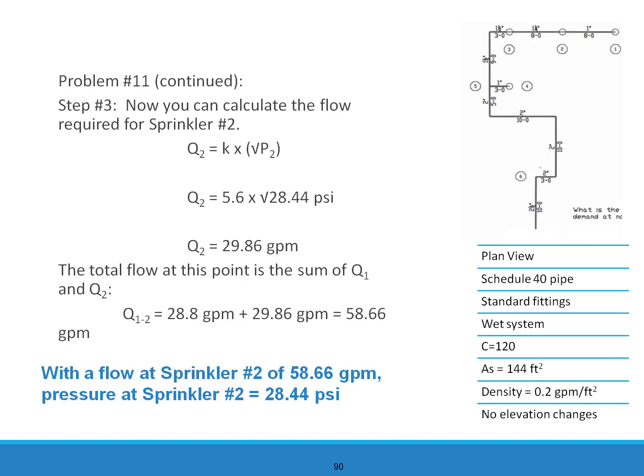Step 3, now you can calculate the flow required for sprinkler number 2. Sprinkler number 2 is equal to K times the square root of the pressure. K2 is equal to 5.6 times the square root of 28.44 PSI. Therefore Q2 is 29.86 GPMs. The total flow at this point is the sum of Q1 and Q2: 28.8 GPMs plus 29.86 GPMs equals 58.66 GPMs. With a flow at sprinkler number 2 of 58.66 GPMs, the pressure at sprinkler number 2 is 28.44 PSI.